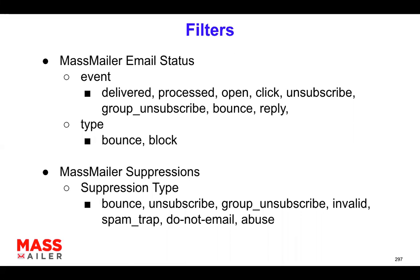It's important to know what those various events are, which is why I mentioned them. For suppressions, you mainly want to know what the suppression types are. The suppression type field can have various values — I've listed them out here. If it's a hard bounce, it becomes a suppression. Other suppression types include: unsubscribe, group unsubscribe. And there's also spam report — that's 'spam underscore report' — which I almost missed.